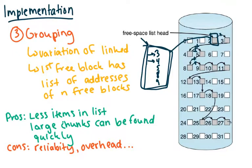Some pros of this is that there's less items in the list. And also large chunks can be found really quickly. So if a large file comes in and it's going to end up needing all 27 of these free or however many are here, all of these free spaces, then in just linked implementation, it would have to walk through each one of these links and grab that space.